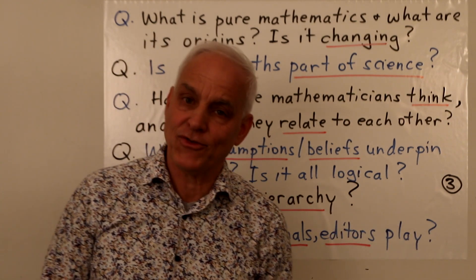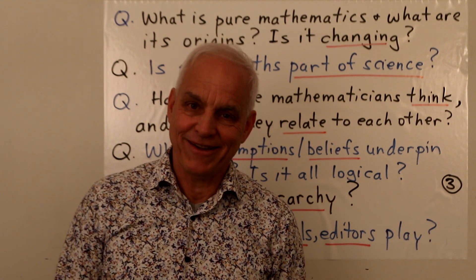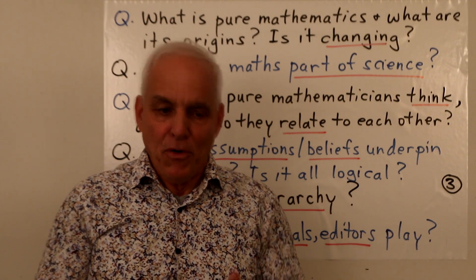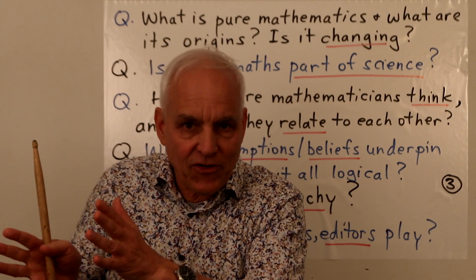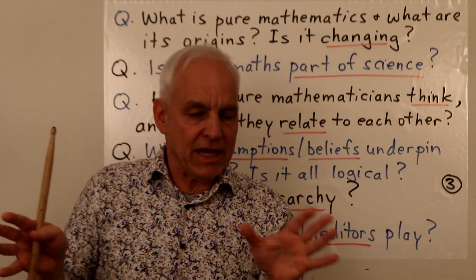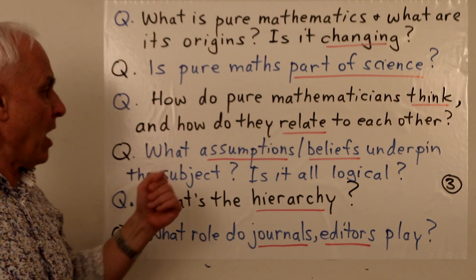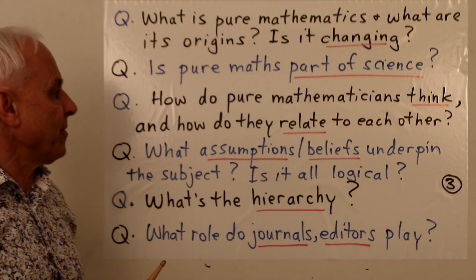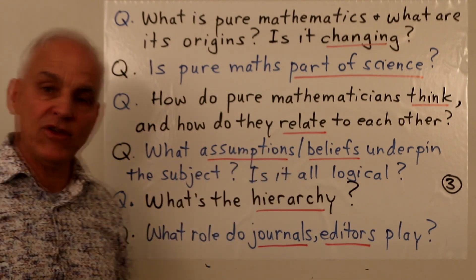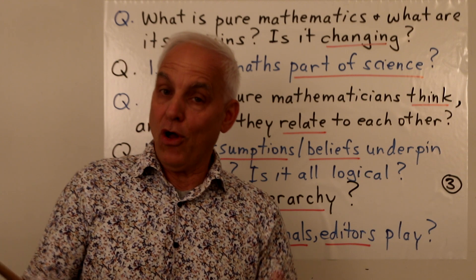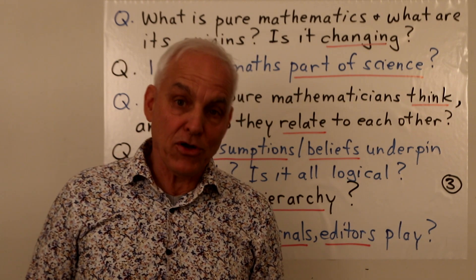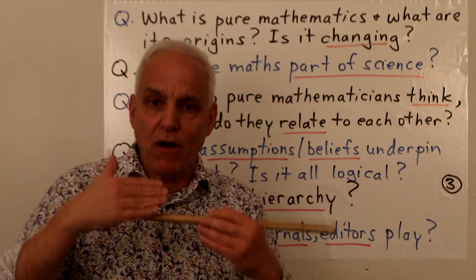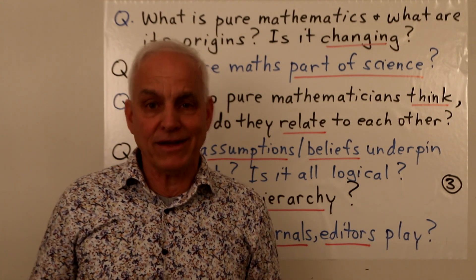Is pure math part of science? This is such an interesting question. Both the parallels with science and the differences with science are really important to keep track of. How do pure mathematicians think? How do they relate to each other? What are the assumptions and beliefs underpinning the subject — or is it all entirely logical? Actually, there are very strong assumptions and beliefs, not usually framed that way, but they influence so much of modern pure mathematics. Students and undergraduates learning mathematics are almost indoctrinated into thinking about foundational issues a certain way, not in opposing ways.